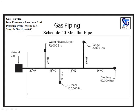Here's a simple gas plan that we'll be using to size the gas piping. Take note of the upper left hand corner. Gas is natural, inlet pressure less than 2 psi, pressure drop 0.5 inches in water column, and specific gravity is 0.6. We're also using schedule 40 metallic pipe. You'll use this information to find the correct table.